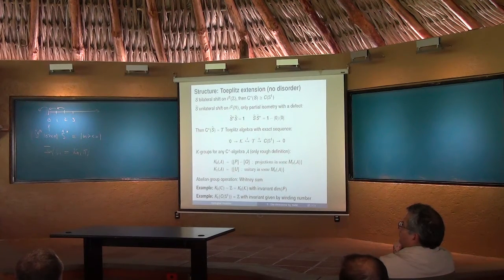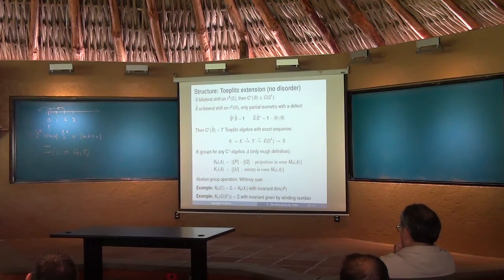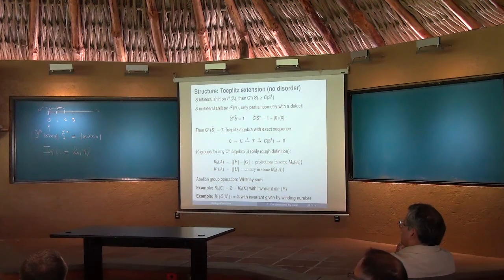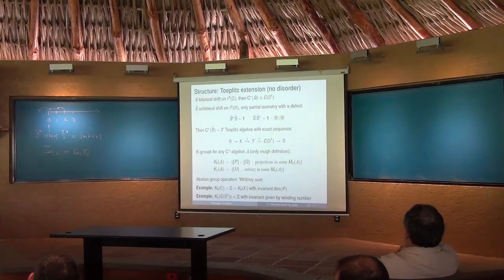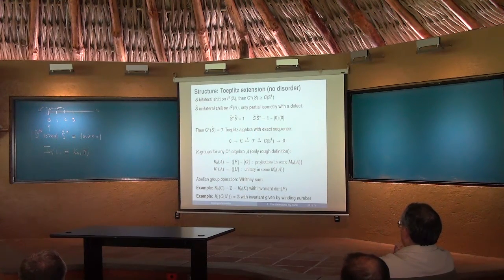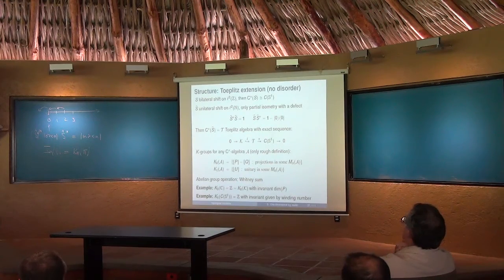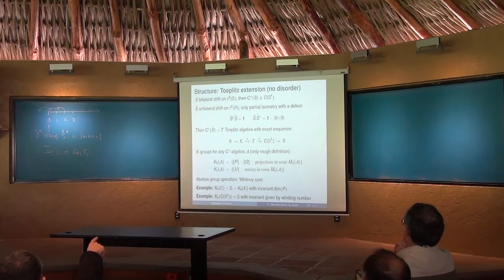Why six groups? Because in the exact sequence of C*-algebras — which in our case was C(S¹), the Toeplitz algebra, and the compact operators — to each one of those you have two groups: K0 and K1. Two times three is six, so we have six groups. What makes K-theory interesting is that these six groups can be put into a diagram of six abelian groups, and this diagram is exact.